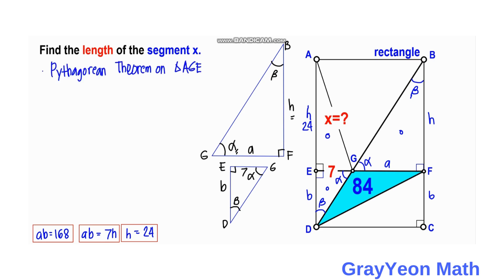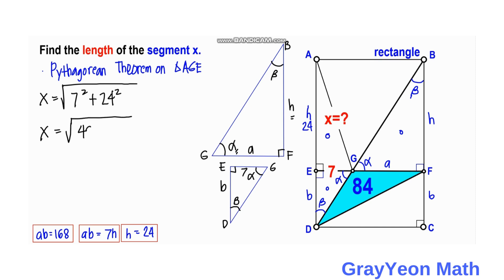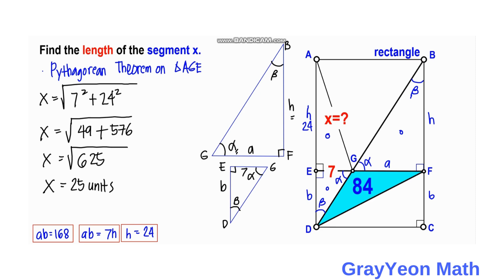For the final step, applying the Pythagorean theorem to triangle AGE: X equals the square root of the two legs squared, so X = √(7² + 24²) = √(49 + 576) = √625. Therefore X = 25 units, and that is our answer.